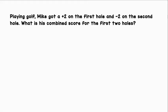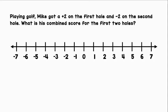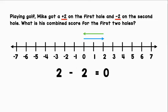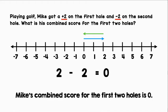Playing golf, Mike got a plus 2 on the first hole, and minus 2 on the second hole. What is his combined score for the first two holes? Let's use a horizontal number line to represent this situation. First, he got plus 2. Then, he got negative 2. So, we can write plus negative 2. That will give us his combined score. Let's find the difference of the absolute values. 2 minus 2 equals 0. 0 is neither positive nor negative. Mike's combined score for the first two holes is 0.